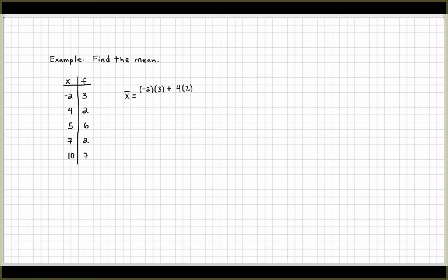So again, we're just going to multiply 4 times 2. And then we multiply the next observation here. We have an observation of 5, we notice it 6 times. So 5 times 6.